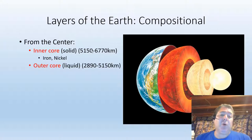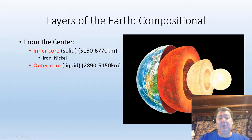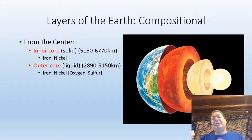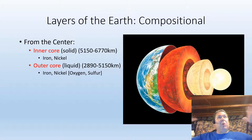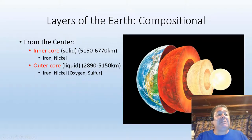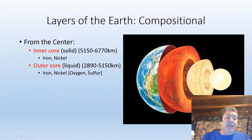Moving out from the inner core, we have the outer core, which is liquid — this is the only part of our Earth that is truly liquid. It is liquid iron and nickel with just a touch of oxygen and sulfur. Now, if it's basically the same composition as the inner core, why is the outer core liquid while the inner core is solid? As you go deeper into the Earth, more pressure is on you. The inner core is under just a little more pressure because it's deeper, so the high temperatures and lower pressure of the outer core allow the iron and nickel to exist in a liquid form.